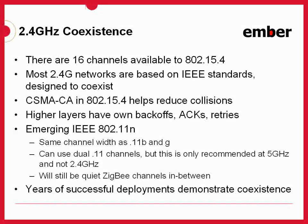As far as making coexistence possible between 802.15.4 networks and either other 15.4 networks or existing IEEE networks like 802.11, ZigBee, or Bluetooth — because there are 16 channels and most other networks out there are standards-based, these things are designed to coexist peacefully. In the case of 802.15.4, because there is a collision avoidance mechanism with CCA that helps reduce packet collisions and therefore corrupted or lost traffic, you have a better chance of getting your packets through even when there's a fair amount of interference. Beyond that, when packets do fail, there are back-offs, acknowledgements at various layers, and retries not just at the MAC layer but also at the layers above.